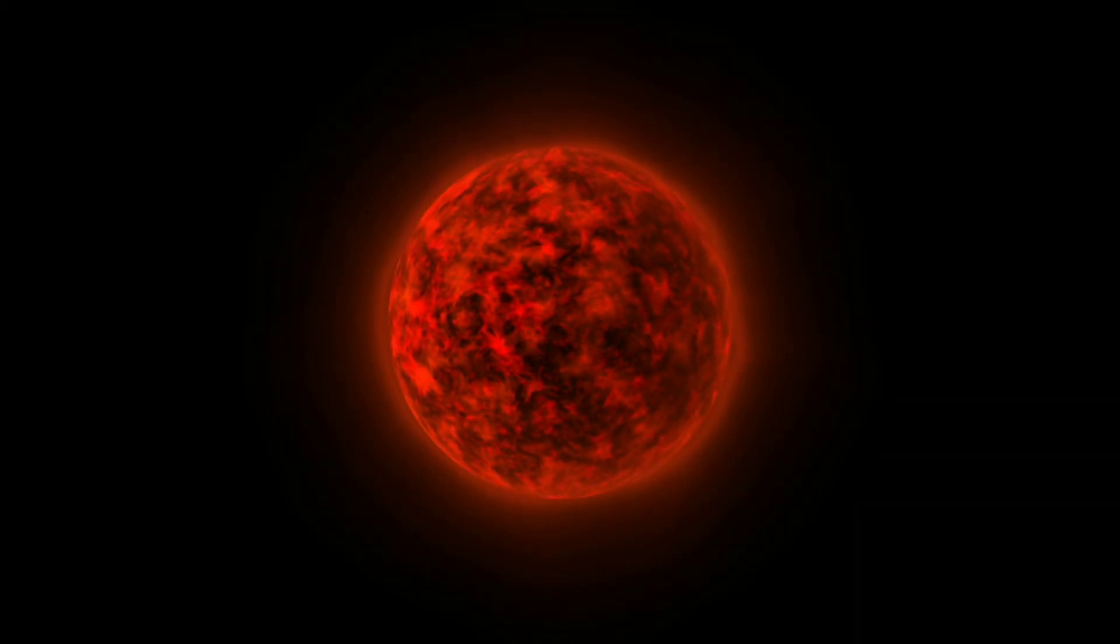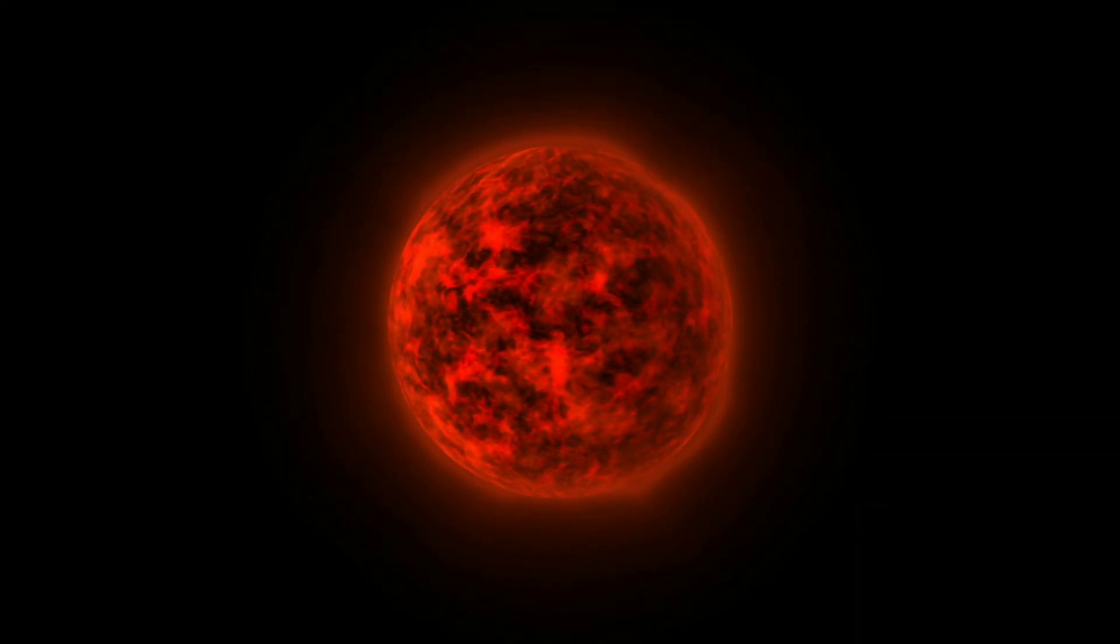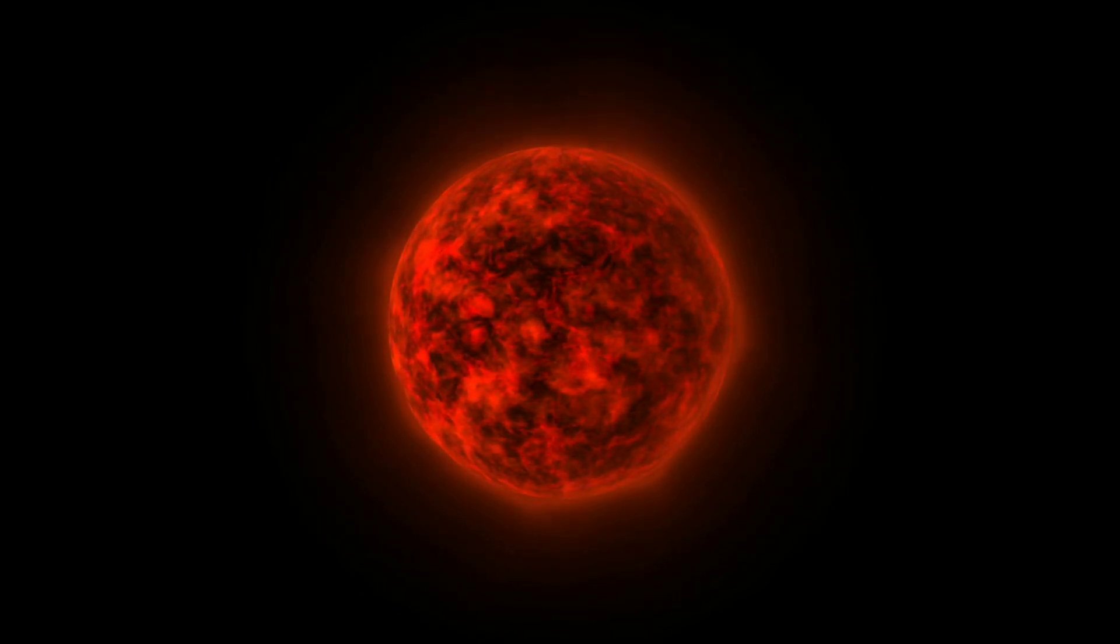The length of time all of this takes depends on the mass of the star. The more massive the star, the faster everything happens. Collapse into a star like our Sun takes about 50 million years. The collapse of a very high mass protostar might take only a million years. Smaller stars can take more than a hundred million years to form.